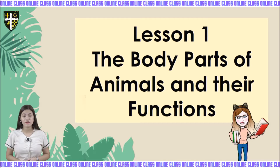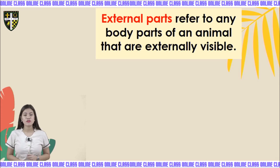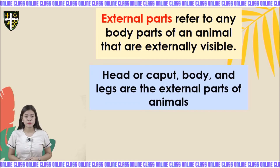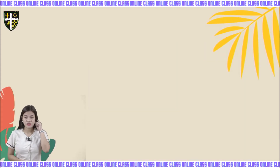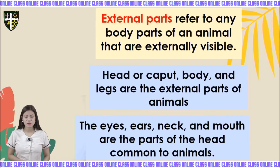Our lesson for today is all about the body parts of animals and their functions. Let's talk about first their external parts. When we say external parts, it refers to any body parts of an animal that are externally visible. Head, body, and legs are the external parts of animals. The eyes, ears, neck, and mouth are parts of the head, common to animals — these are the parts our naked eyes can see.